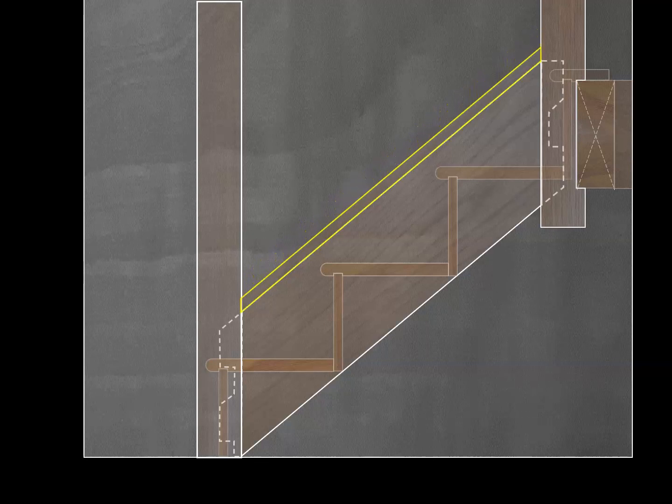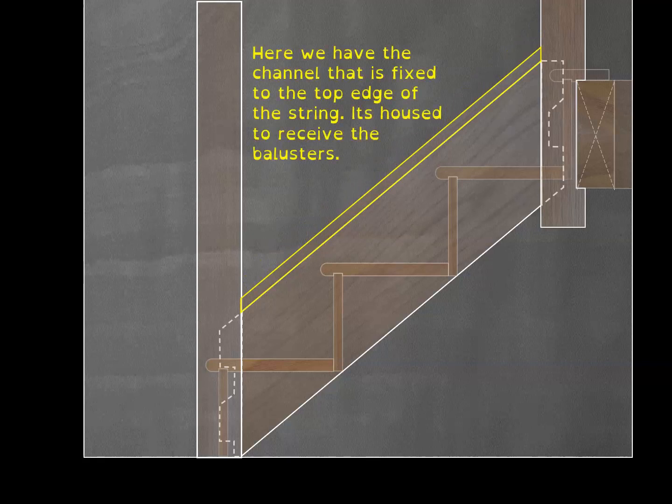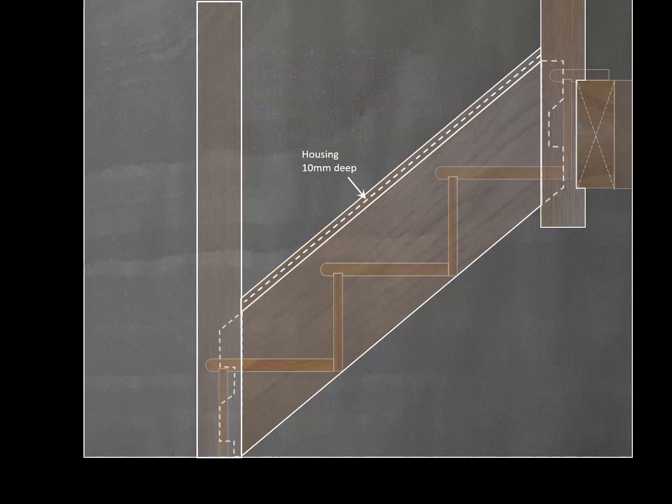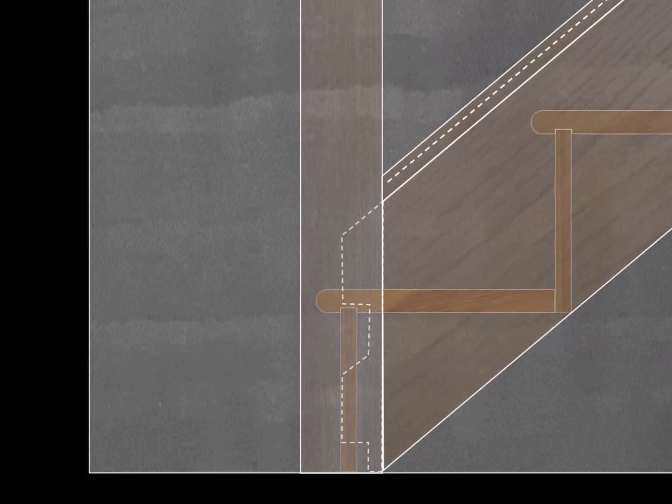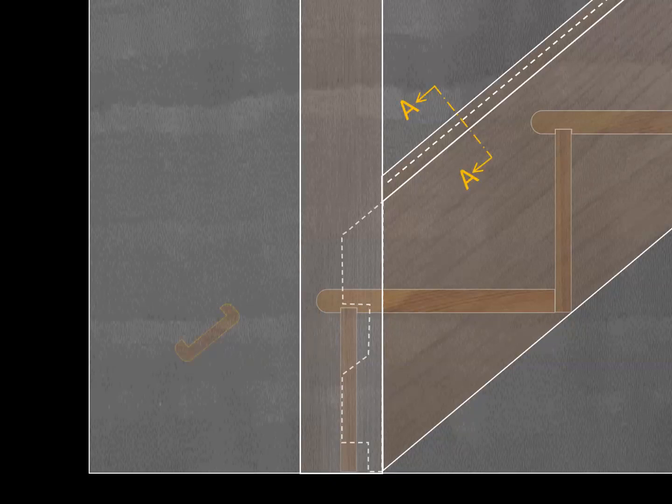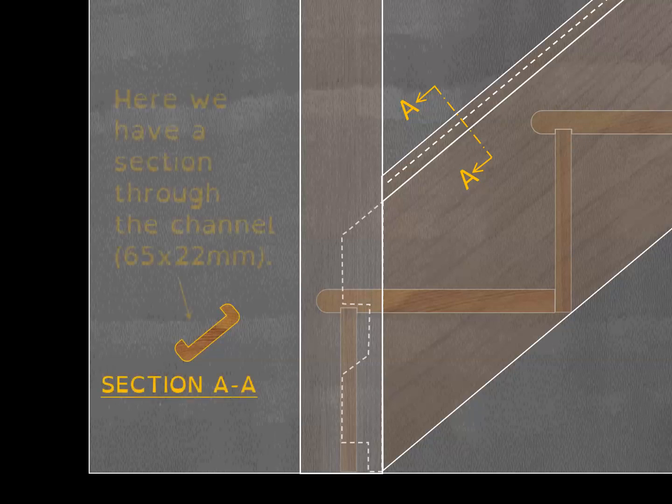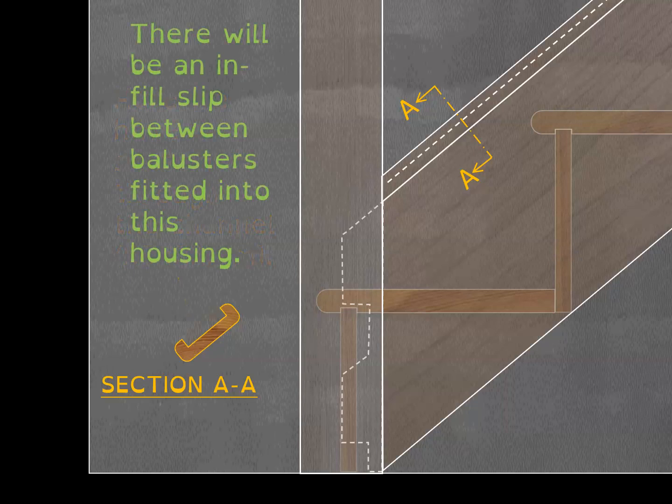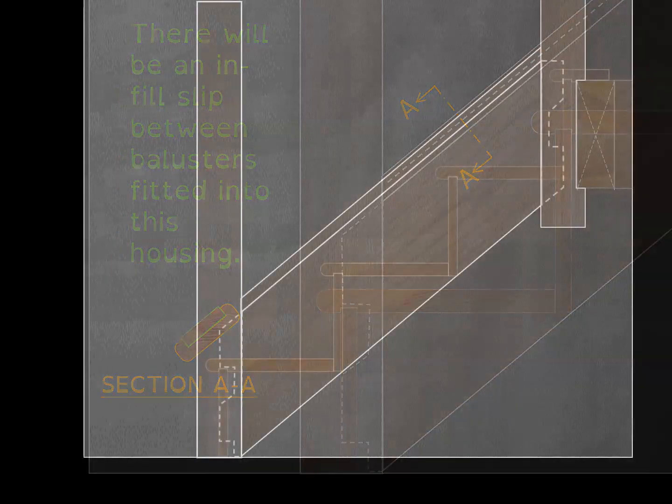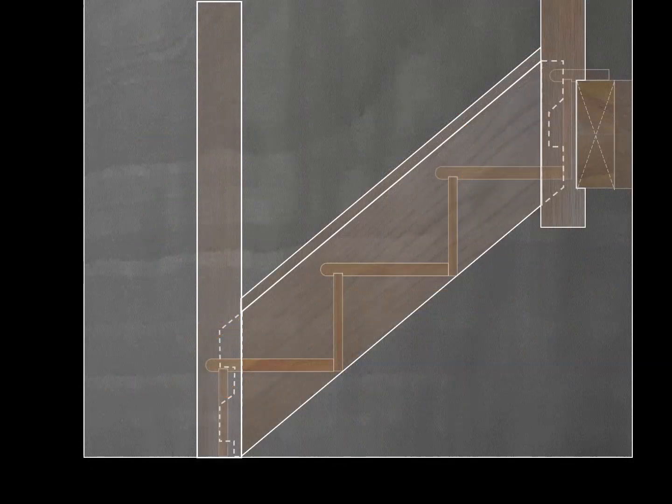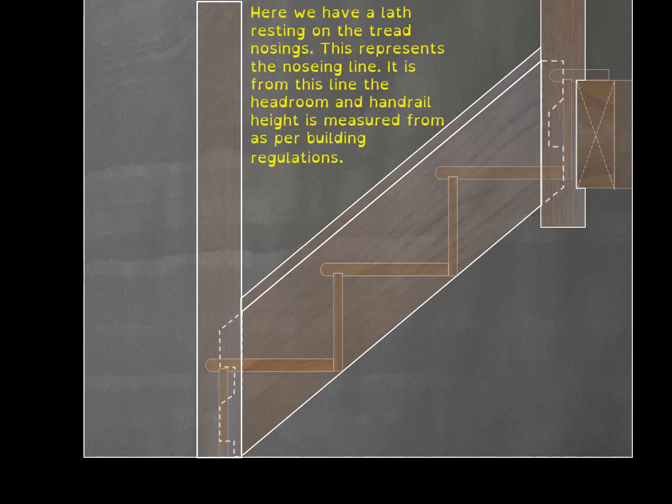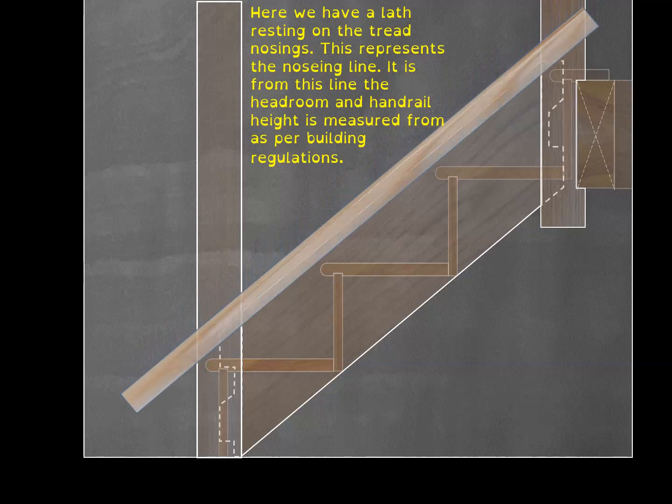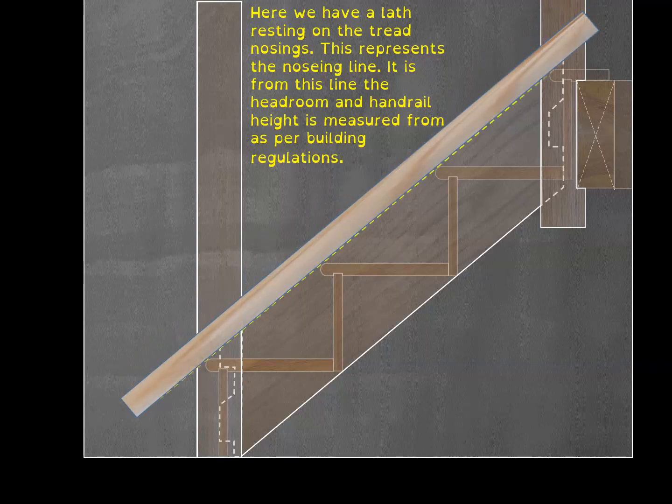The next item is the channel that's screwed to the top of the string to receive the balusters or spindles. It's housed out to take in the thickness of the balusters. I drew section A through that to show the housing, which is about 10mm deep. The piece of timber itself is about 62-65 by 22. There's a slip shown in green outlined between the balusters. That slip is usually slightly proud of the housing, so you're breaking the joint rather than showing a crack line, which you wouldn't want.